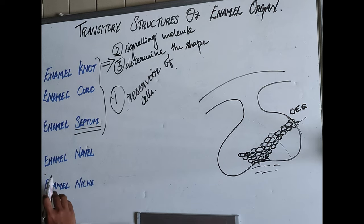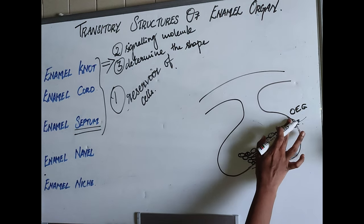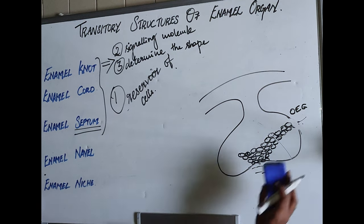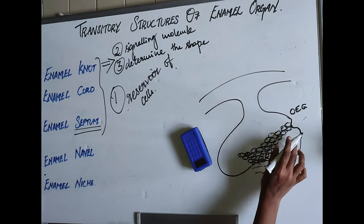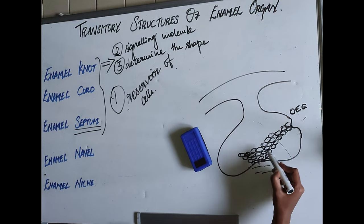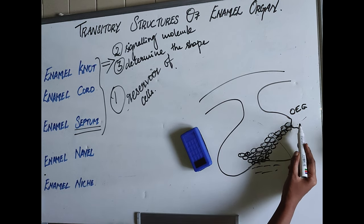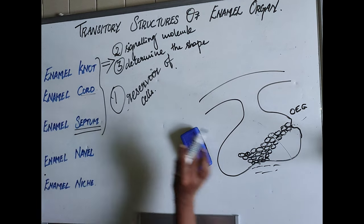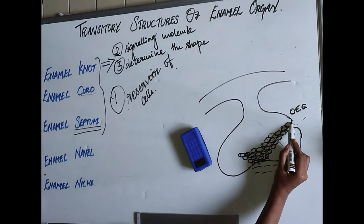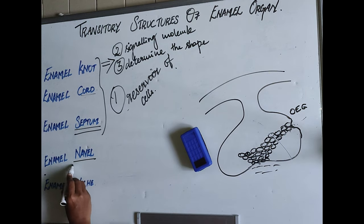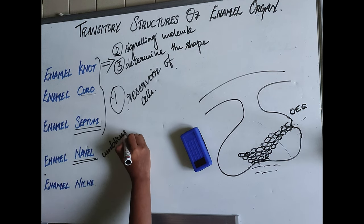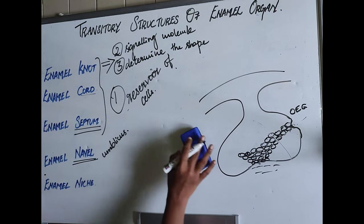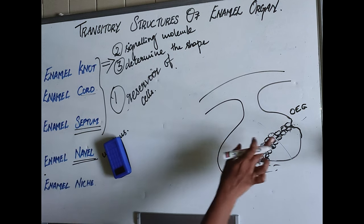Now, the enamel navel. Enamel navel is a small invagination in the area where the enamel cord joins the outer enamel epithelium. When the enamel cord joins the outer enamel epithelium, there is a small invagination — that is called the enamel navel. 'Navel' means umbilicus, and it is an invagination resembling the umbilicus, so it is called the enamel navel.